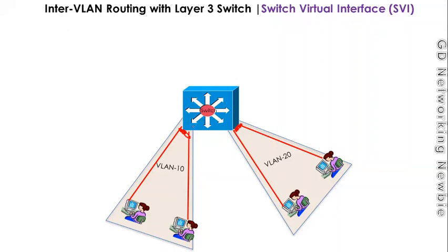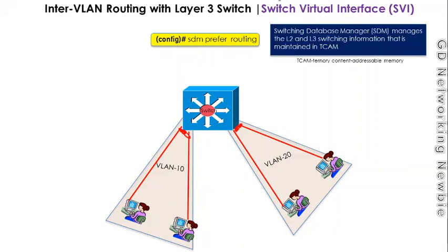In some switches we need to enable this feature by using SDM. SDM is the Switching Database Manager, which manages the layer 2 and layer 3 switching information — for instance, the routing table — and that is maintained in a special memory known as TCAM, which stands for Ternary Content Addressable Memory, a special memory mostly used in networking. We use this command to enable that feature in some switches like the 2960, and then this will enable IP routing.